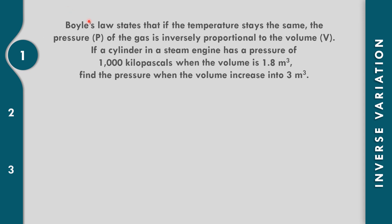In example number 1, Boyle's Law states that if the temperature stays the same, the pressure P of the gas is inversely proportional to the volume V. If a cylinder in a steam engine has a pressure of 1,000 kilopascals when the volume is 1.8 cubic meters, find the pressure when the volume increases to 3 cubic meters. Since pressure is inversely proportional to volume, P is equal to k over V.